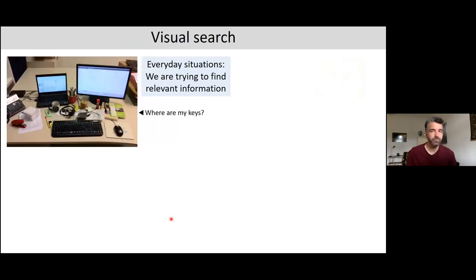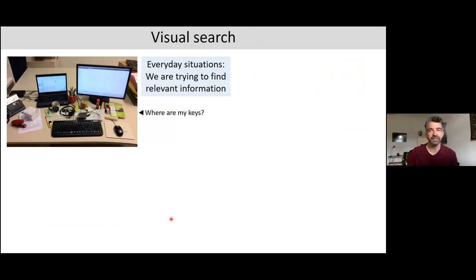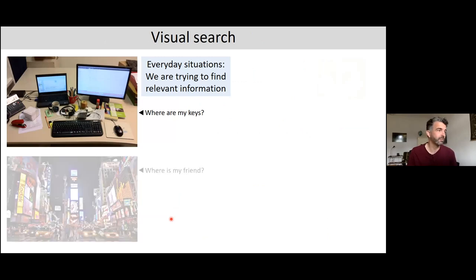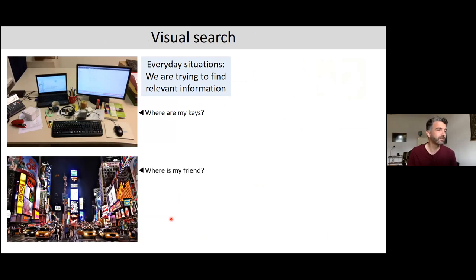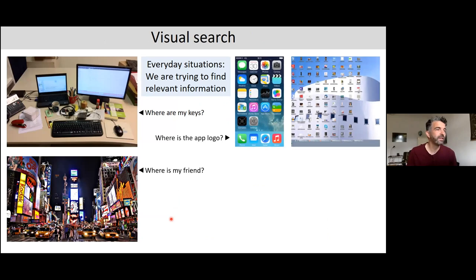This is important in everyday life: even if you don't expect it, a red traffic light is salient and can capture your attention. This brings us to the concept of visual search — looking for something potentially relevant among other items. Examples include: where are my keys, where is my friend, or finding a specific app logo on your phone.